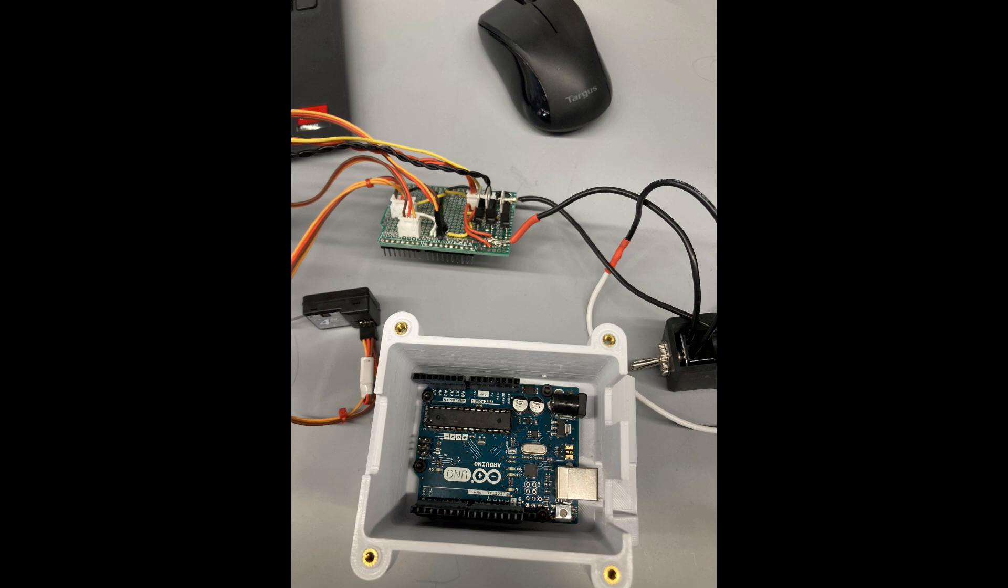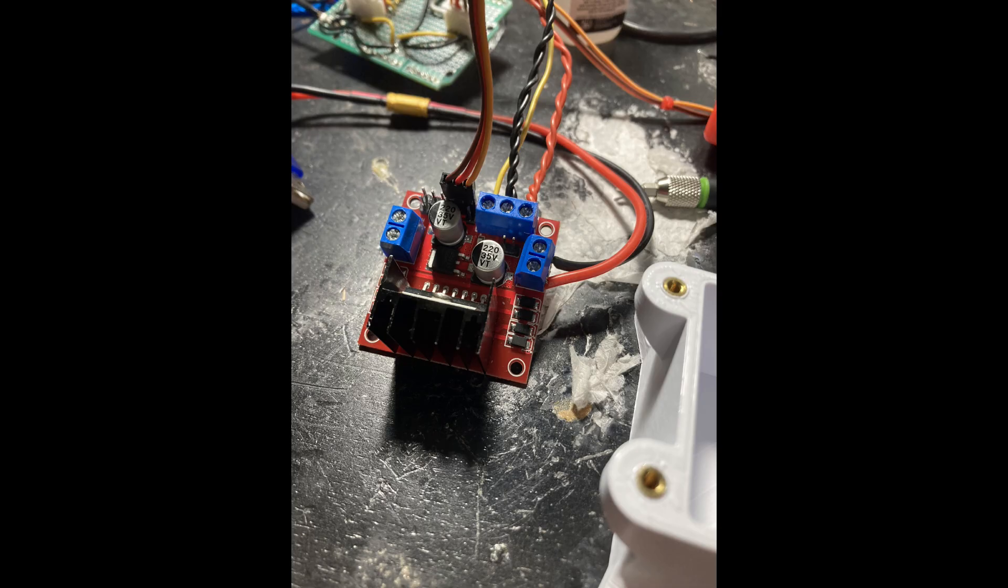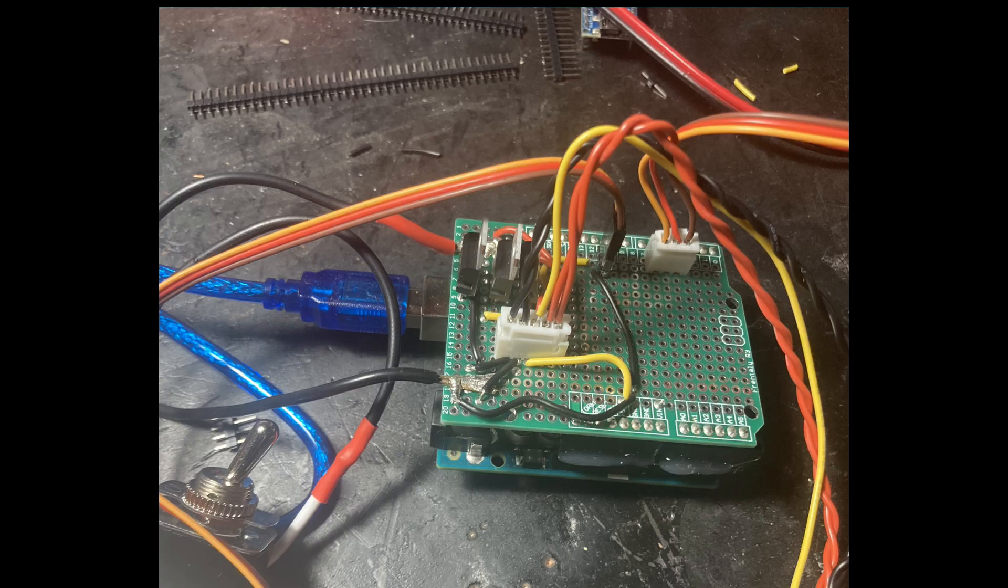Here's the Arduino Uno in its 3D printed enclosure. This is the L298N motor driver chip, also had a 3D printed enclosure. That's the custom little shield I made with connectorized soldered joints for everything.